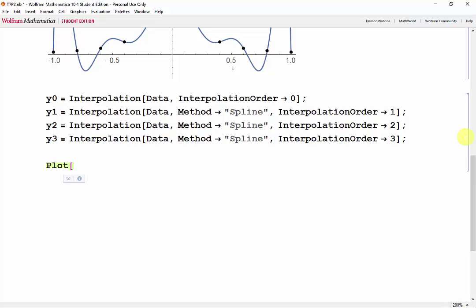Now this time, we need to use square brackets in order to plot the functions. So y0 of x. And then the same bounds. Epilogue. Point size medium.